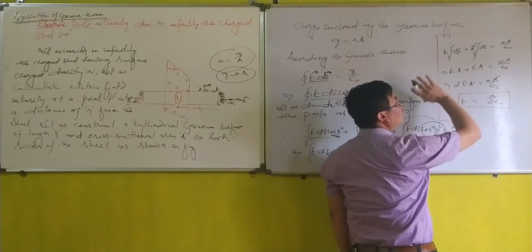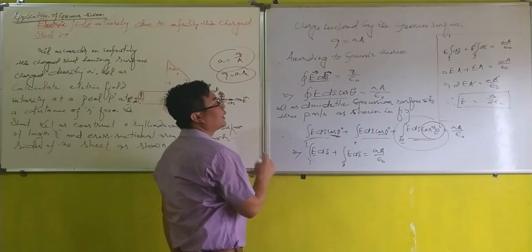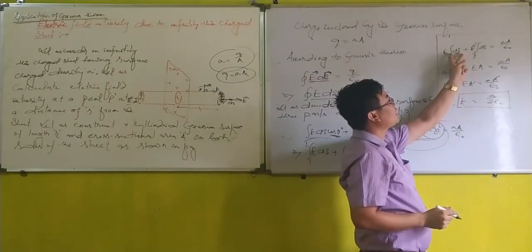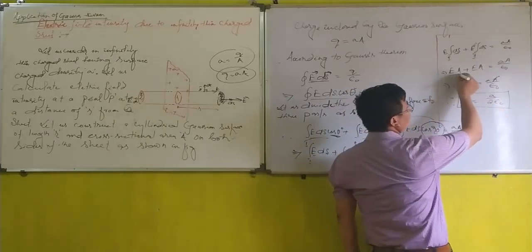What is dA? Small area element on the surface. And integration only gives us the total cross-sectional area A. Therefore, this integration of dA is A. And if these two terms are added together, we have 2EA.